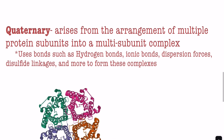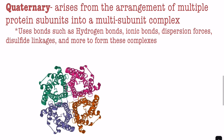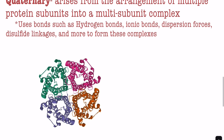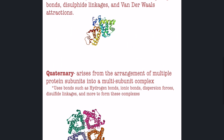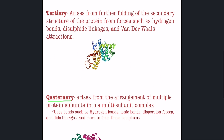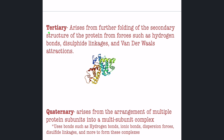Moving on to the quaternary structure of a protein: the quaternary structure arises from the arrangement of multiple protein subunits into a multi-subunit complex. It uses bonds such as hydrogen bonds, ionic bonds, dispersion forces, disulfide linkages, and more to form these complexes.